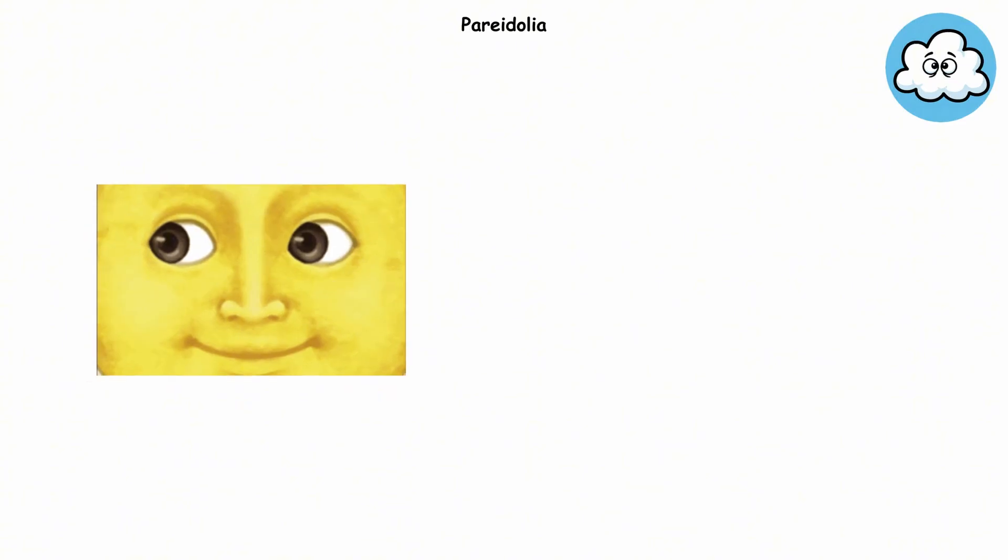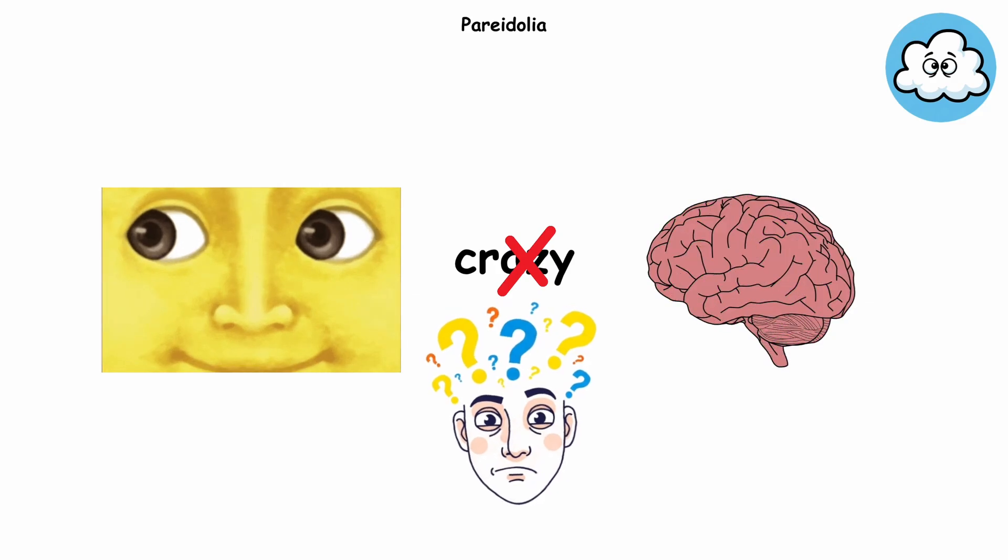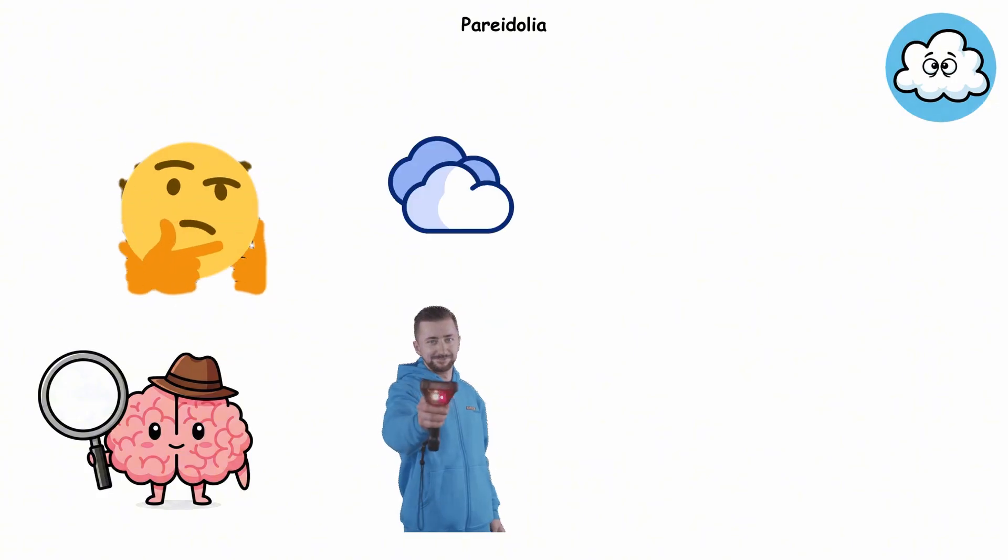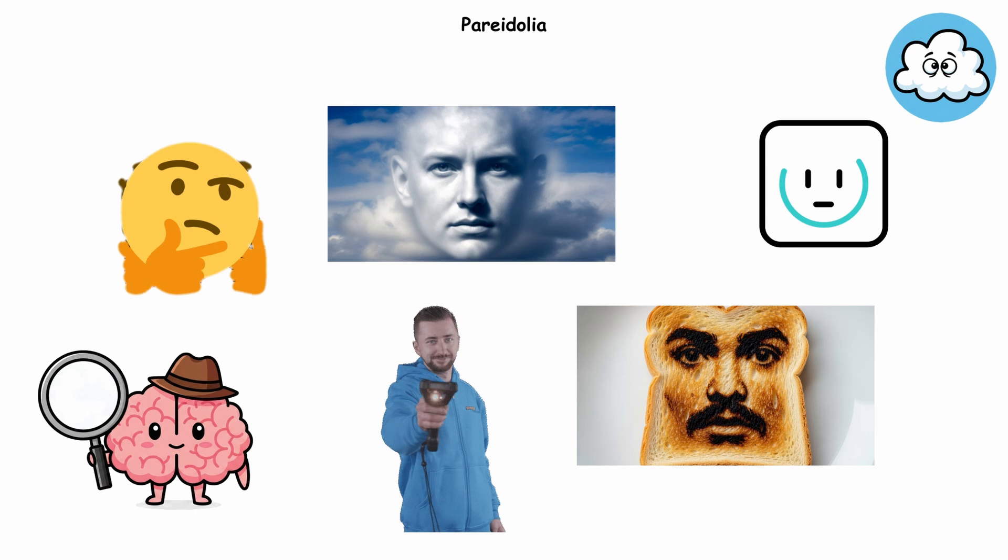Pareidolia. You ever glance up at the moon and suddenly there's a creepy face staring back? That's not you going crazy. That's your brain running its favorite glitch: pareidolia. Think of your brain like an overzealous emoji detector. It's scanning everything. Clouds, toast, even sockets, desperate to slap a smiley face sticker on it.